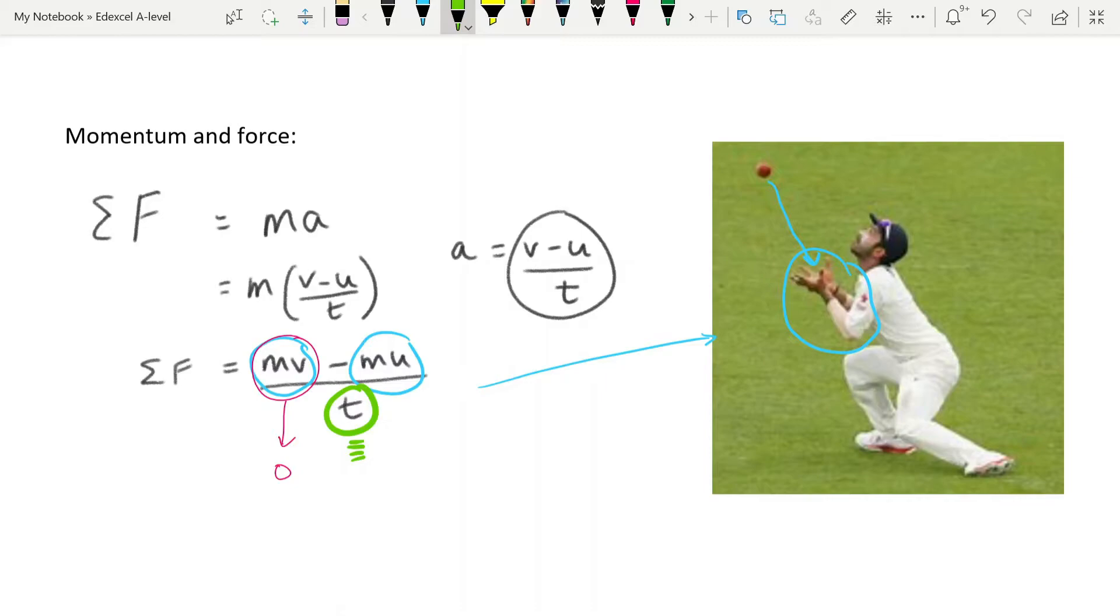So instead, what people do is they reach their hands up, and they pull them back as the ball collides with their hands, so that they increase this time over which the ball slows down. They increase the time over which the momentum changes, and that decreases the resultant force. And this has a lot of applications, not just in catching cricket balls, but in crash mats, and cushions, and padding on the floors of children's playgrounds. All of these things are there to increase the time slightly over which the momentum of an object has changed, and therefore reduce the force.